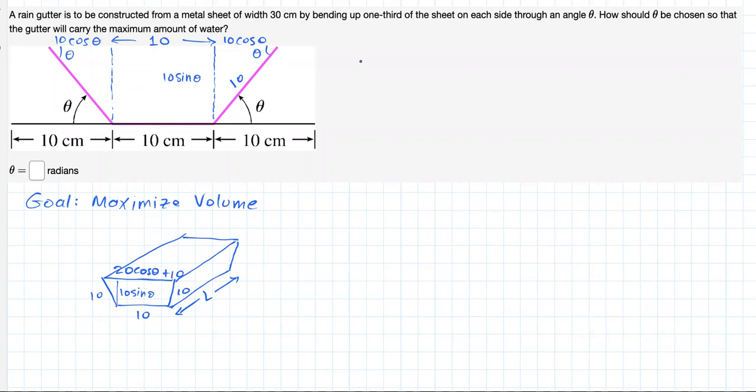Now I got to compute the volume in general, right? In general, the volume should be the area of this trapezoidal base times this depth L. The area of the trapezoid, according to geometry, is just the average of the bases.